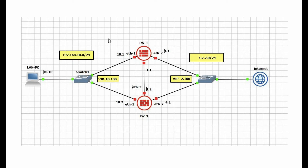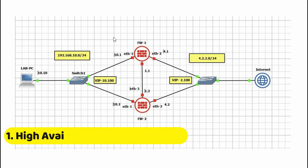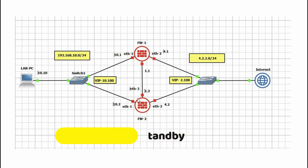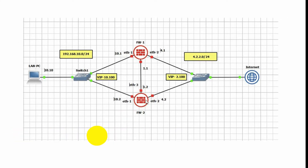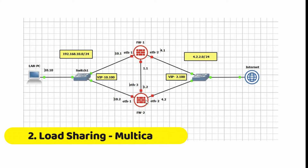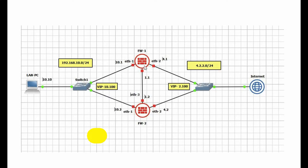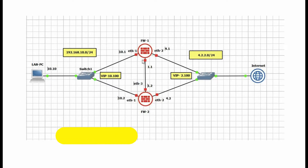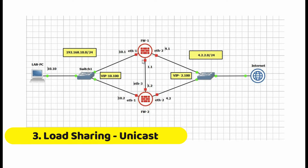There are three modes in Check Point firewall. First is HA mode — High Availability mode. In High Availability, at a time one firewall will be active and the other firewall will be standby. Second is Load Sharing Multicast mode — in this mode both firewalls will be active and both will share 50-50 traffic.